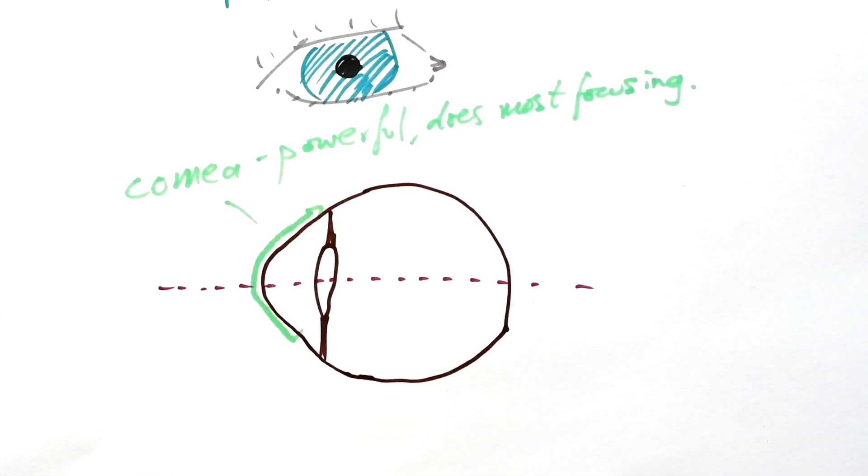Now this is similar to cameras. On a camera, you'll have a lens on the very front that light goes into and that doesn't change, but that's the thing that makes sure that it gets as much light as possible traveling down the lens. Same thing with the cornea.